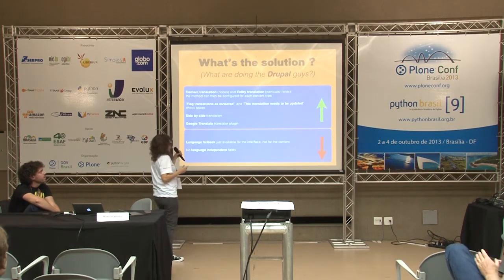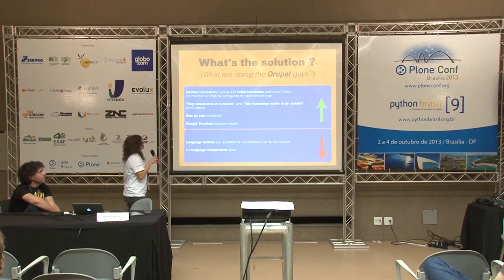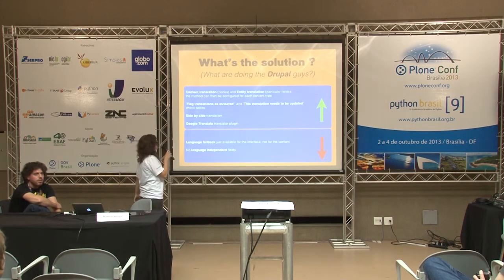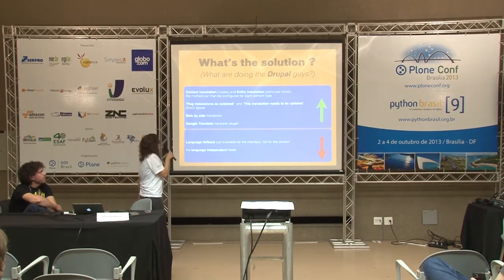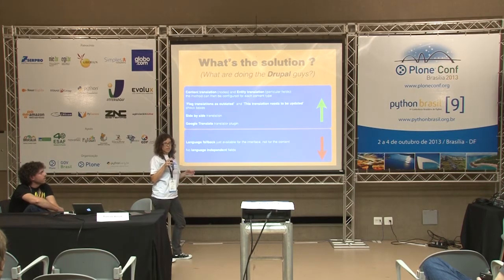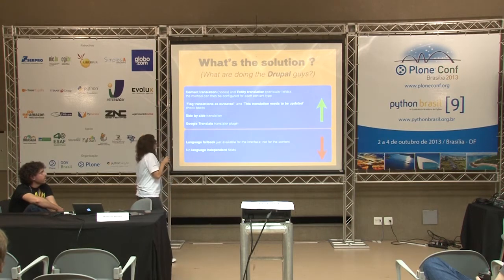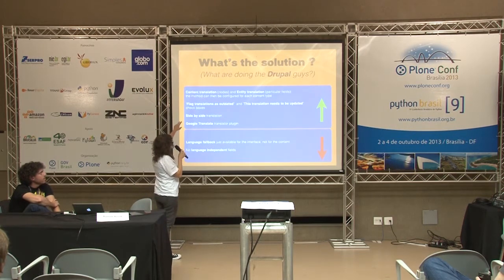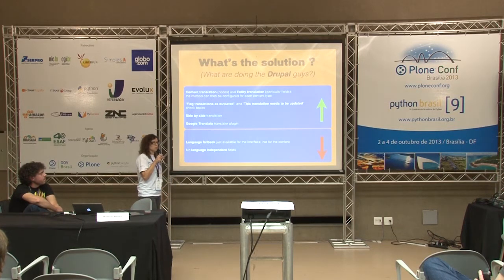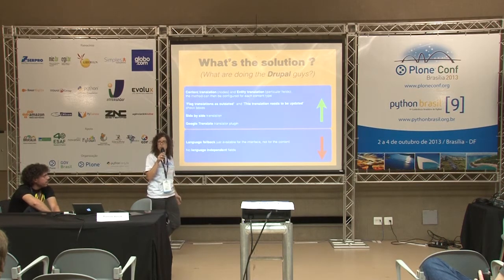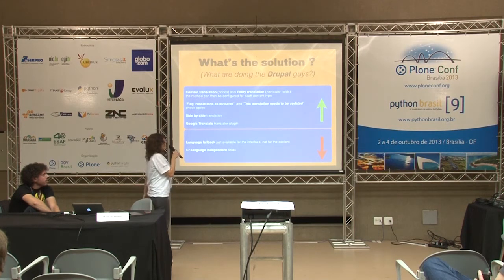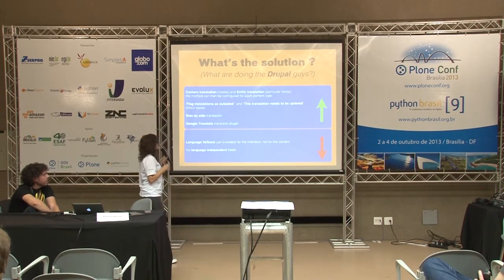The Drupal guys have a really good solution. They allow translating content and also translating entities — that is, our objects and fields in Plone. You can configure each method for every kind of content type, which is pretty useful. They also have two nice features: tracking your translations. A common problem is that when you create content you have to translate it but you're not usually the one doing the translation, so you need to flag it. You also need to mark other translations as outdated when something changes. They have two nice checkboxes for that.